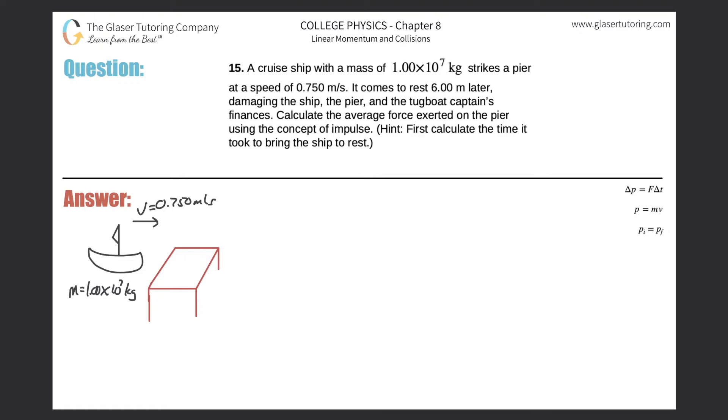Number 15. A cruise ship with a mass of 1 times 10 to the 7 kilograms strikes a pier at a speed of 0.75 meters per second. It comes to rest six meters later, damaging the ship, the pier, and the tugboat captain's finances.